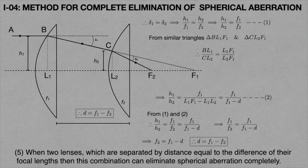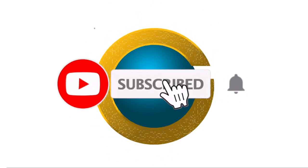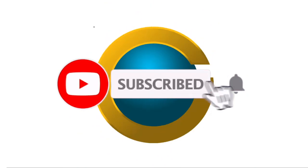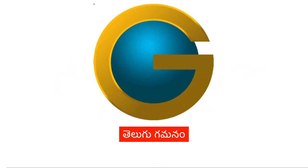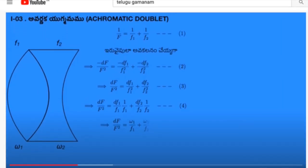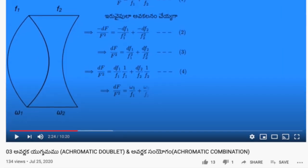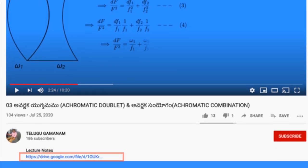This condition is called complete elimination of spherical aberration. Please subscribe to our Telugu Gamanam channel for more lecture videos and click the bell icon for notifications. If you want to get lecture notes for this video, click the description link below.